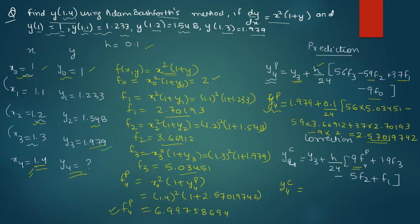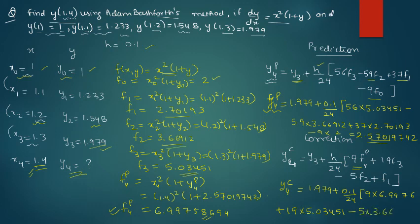Plus h is 0.1 by 24: 9f4 prediction is 6.9976, let's take up to 4 decimal places, plus 19f3 is 5.03451, minus 5f2 is 3.66912, plus f1 is 2.70193.